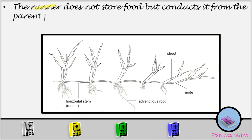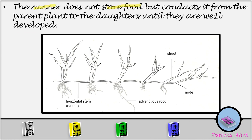The runners do not store food, but conduct nutrients from the parent plant to the daughters until they are well developed. So, this runner, the runner itself does not store the food, but it passes it over to the daughters. And when the daughters are well developed, then it will go and pass it on to another bud. So, the runner does not store the food, but it conducts nutrients from the parent to the daughters until they are well developed.